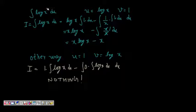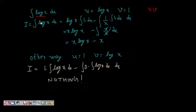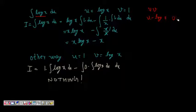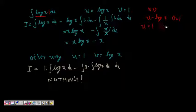The first problem is integral log x. Now you might say there is only one function here, not a product of two. But we can always say that if u is log x, then v is 1, because 1 is also present. So we can write it as log x · 1.